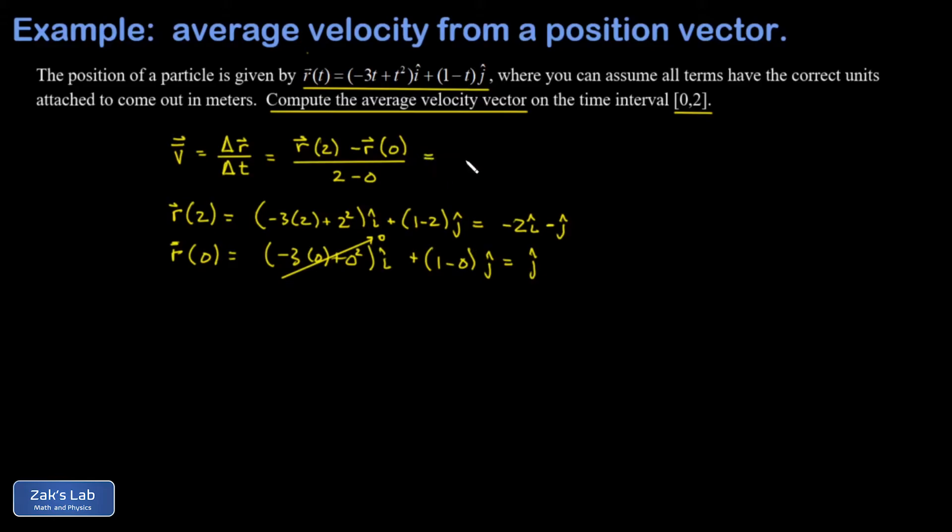Now I can get back to taking the difference between the final and initial position. I plug in my r of 2. That's negative 2 i hat minus j hat. And I subtract my r of 0, which is just j hat. And I divide by 2.